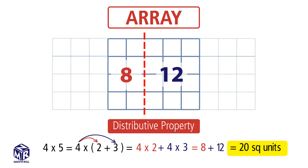In fact, we found the area of a 4 by 5 rectangle, where 4 is the width and 5 is the length, using the distributive property. We broke apart this rectangle into two smaller rectangles, found the area of each, and summed them up. So the area is 20 square units.